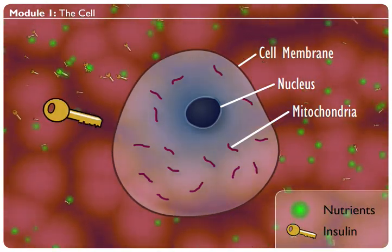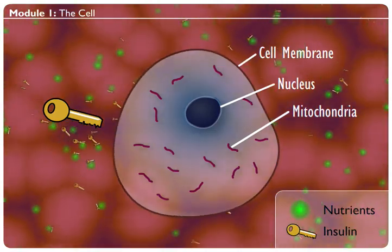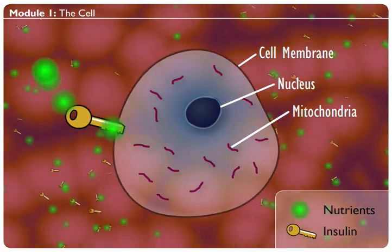Insulin is like a key that opens the lock in the cell to be fed. When the cell membrane is soft and the lock opens easily, insulin easily opens the door and lets the nutrients in to feed the cells.